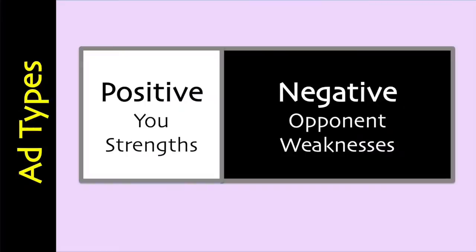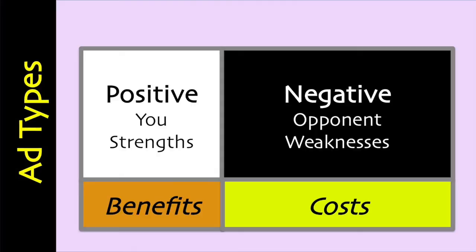The primary goal in advertising, we feel instinctively, should be positive. Positive ads are the ones that promote you, your character, your capabilities. Positive ads show why you are better. The negative ad is the one that talks about your opponent, with the objective being to show that your opponent is unqualified and untrustworthy — that they are not as good as you. The positive ad will show the benefits of your program, creating optimism and expectations. The negative ad will show the risks and costs associated with your opponent and their program.